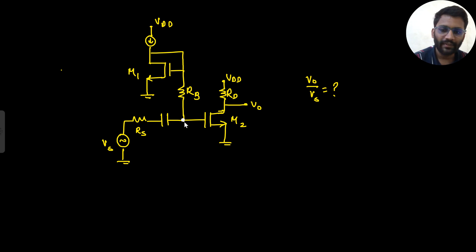Whatever potential we get here will be amplified with the gm2 into Rd. So we have to find the potential here, that's our main task. We don't know the potential here, let's assume this potential is V. So what will happen here, gmv current will flow.